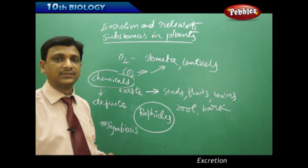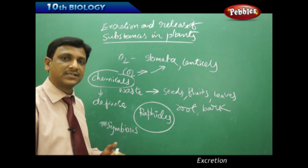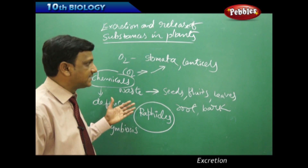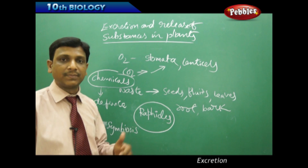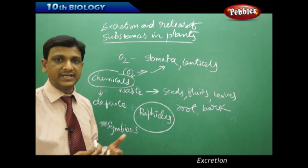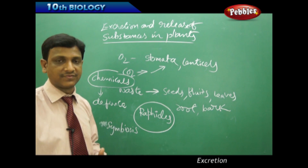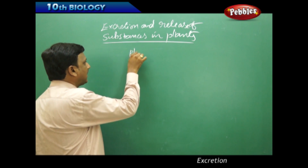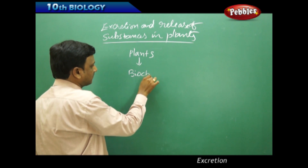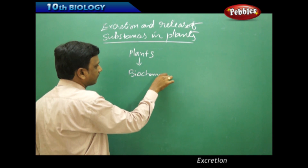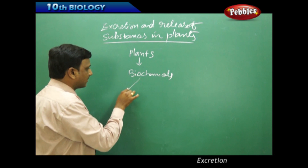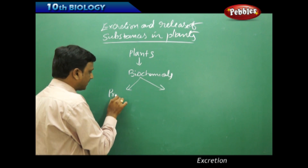Many plants secrete various materials — for example, the rubber plant produces latex, and various alkaloids are produced from different plants. So plants produce and synthesize various kinds of biochemicals.